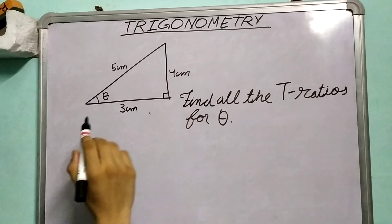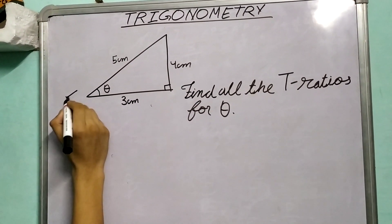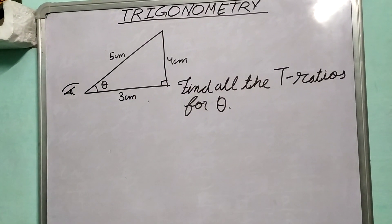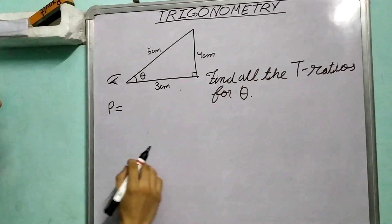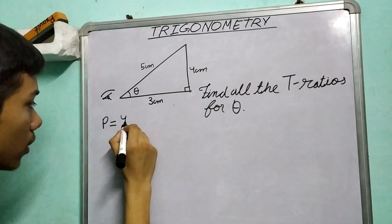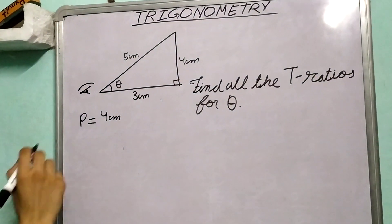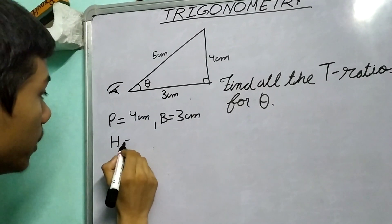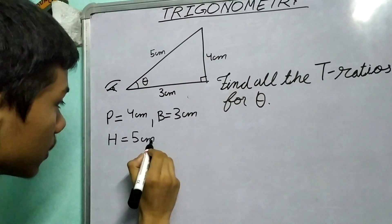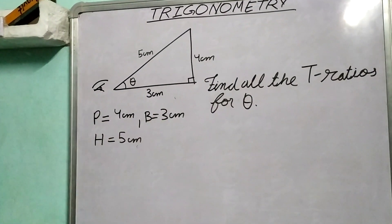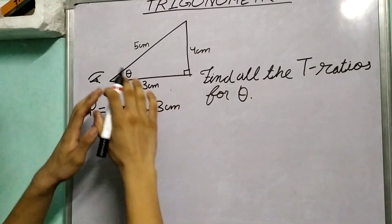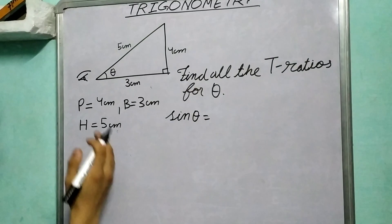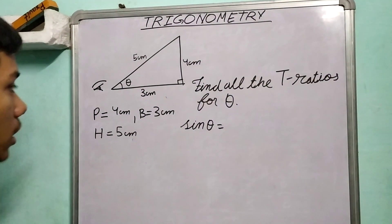So if we look from theta's point of view, then which side will be the perpendicular side? Clearly the perpendicular will be this side, and this has a measure of 4 centimeters. What will be the base? The base will be 3 centimeters, and the hypotenuse will be 5 centimeters. So now we have all the three things which we wanted.